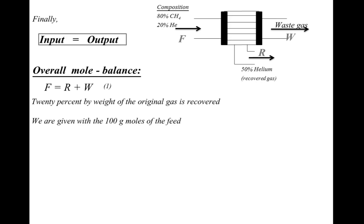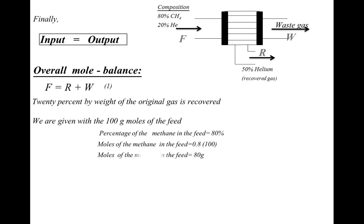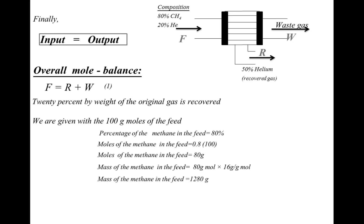The methane mole flow rate is 0.8 × 100 = 80 kg moles. Converting to mass: mass = moles × molecular weight, so mass of methane in the feed = 80 × 16 = 1280 kg. For helium: 20% in the feed gives 20 kg moles, and mass of helium = 20 × 4 = 80 kg.